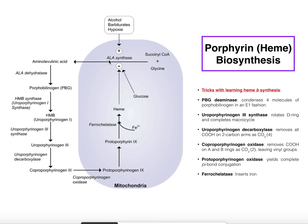ALA synthase generates delta-aminolevulinic acid, which is then shuttled out into the cytoplasm. The following enzymes all occur in the cytoplasm: ALA dehydratase (porphobilinogen synthase), porphobilinogen deaminase, uroporphyrinogen III synthase, and uroporphyrinogen decarboxylase — giving us coproporphyrinogen III.